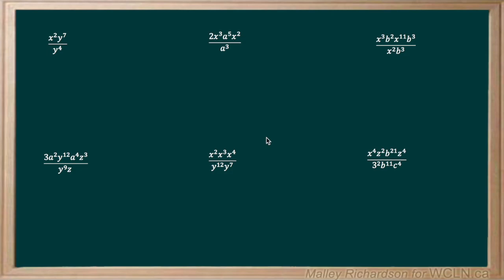These next few examples all deal with complicated expressions. There are two things we need to remember when dealing with these expressions. The first thing is when multiplication occurs, order does not matter. For example, in our first question we have x to the power of 2 times y to the power of 7. This would be the same as saying y to the power of 7 times x to the power of 2. Because we reverse the order it doesn't matter — we still get the same answer, so order does not matter.